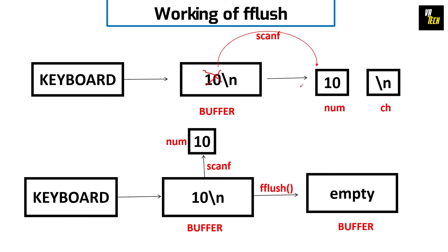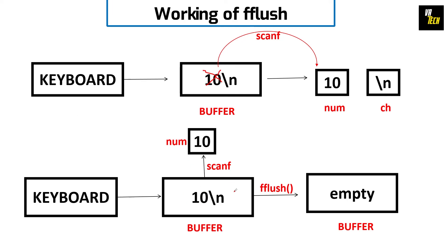To solve this problem and clear the buffer, we will use the fflush function. When the first scanf is encountered, it takes the 10 and assigns it to the num variable. Then fflush is encountered and it clears out the buffer, so that when the second scanf is encountered and sees the buffer is empty, it will ask for the next input. Remember, you can only input another character when the buffer is empty. So fflush will empty the buffer and the next scanf will ask for the input.